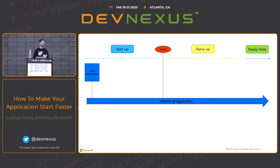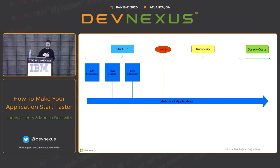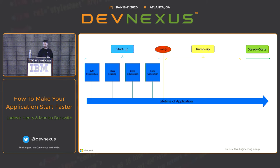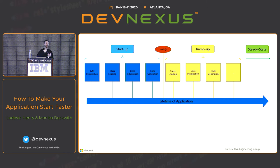What happens during each phase? During startup: JVM initialization, class loading, class initialization (static constructors), and code generation — whether interpreted, C1, or C2 — just to make the application ready to run. During ramp-up, we do the same things: more class loading, class initialization, and code generation — for as long as the application is not hot. Once we reach steady state, by definition we don't need to do any of that anymore.